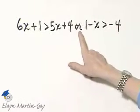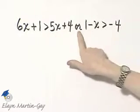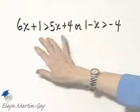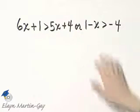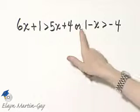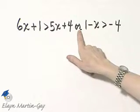Notice this is a compound inequality. It's two inequalities put together with the word or. So let's solve each inequality separately, and then we'll find or, which means the union.